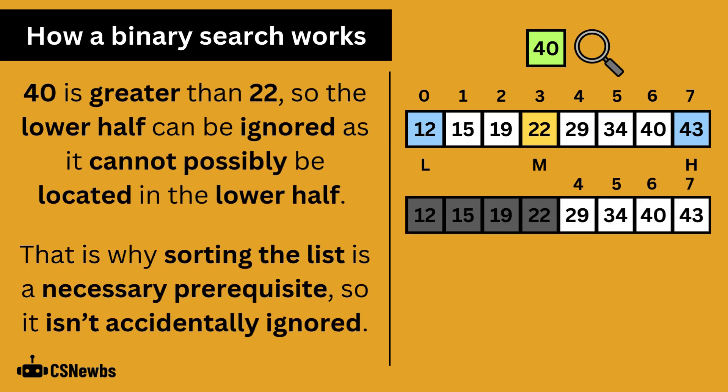In this example we are searching for 40 and 40 is greater than 22. So the lower half can be ignored as it cannot possibly be located in that half. That is why sorting the list is a necessary prerequisite so that it isn't accidentally ignored.